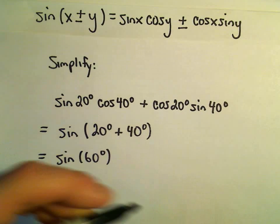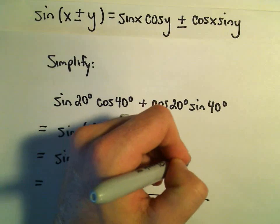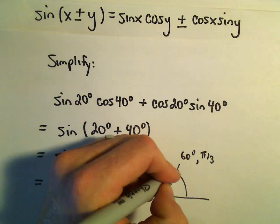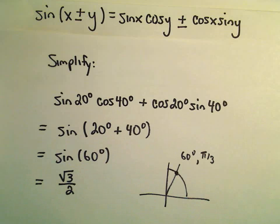And let's see, sine of 60 degrees, again, on the unit circle, that's the same thing as pi over 3. And sine at that angle, the unit circle, sine of 60 degrees, is going to give us simply the value of the square root of 3 over 2.